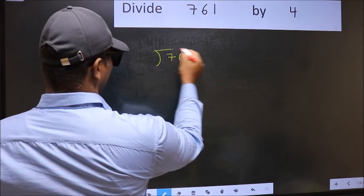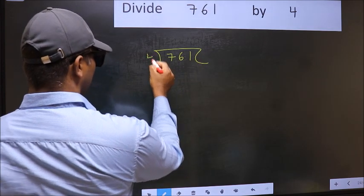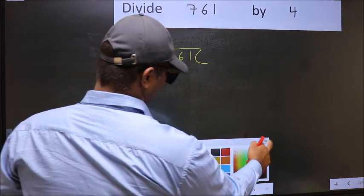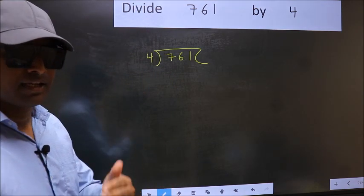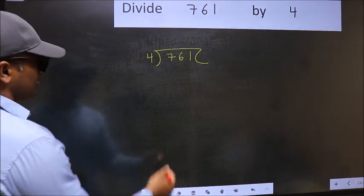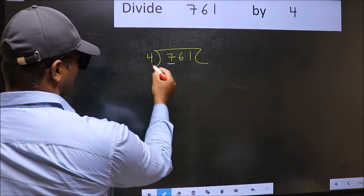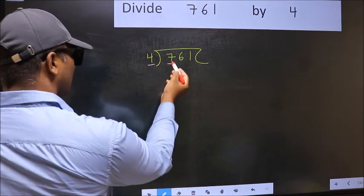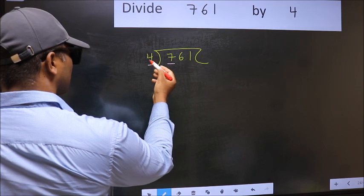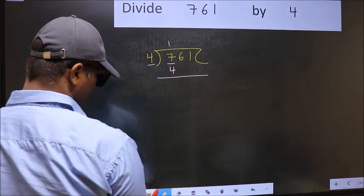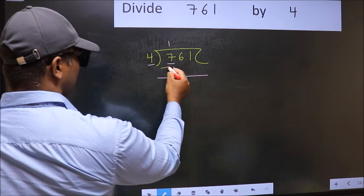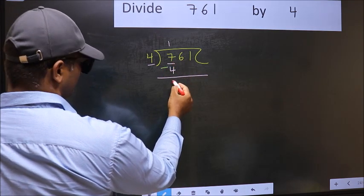761 and 4 here. This is your step 1. Next, here we have 7 and here 4. A number close to 7 in 4 table is 4 once 4. Now you should subtract. 7 minus 4, 3.